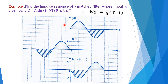One more example: find the impulse response of a match filter whose input G(T) = A·sin(2πF/T) for 0 ≤ t ≤ T, and G(T) = 0 otherwise. The impulse response of a match filter is the time-reversed and delayed version of the input signal. So we need G(−T) which is the mirror image (folded/time-reversed signal).